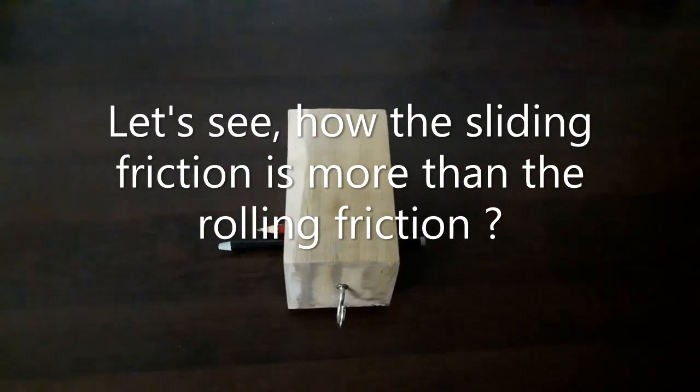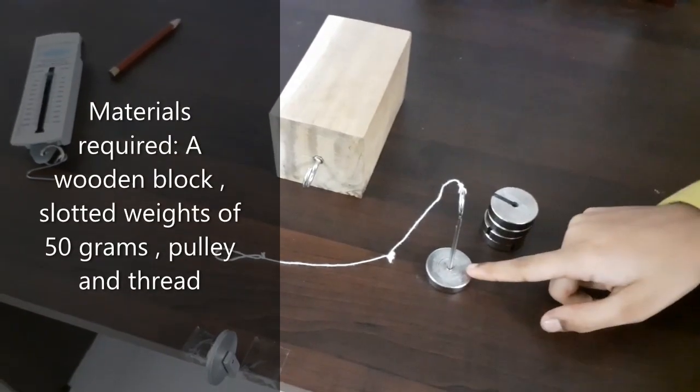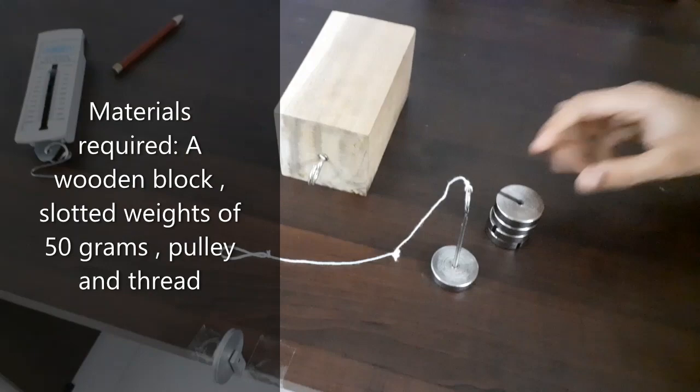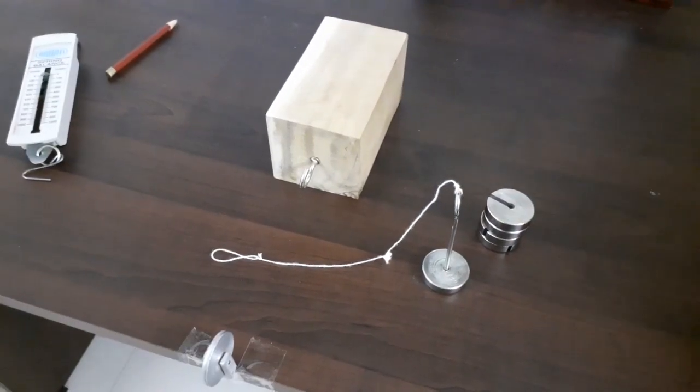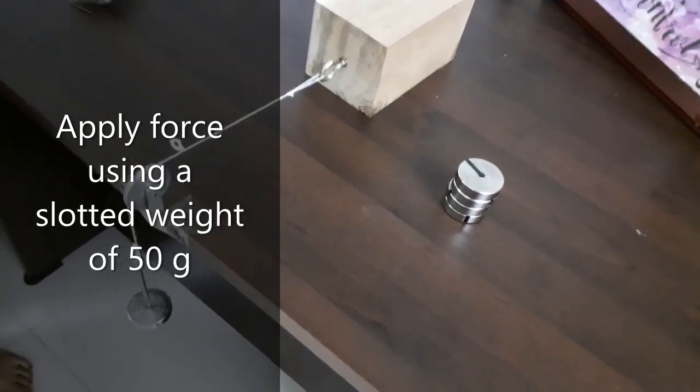Let us move on to the actual experiment where we are going to see how sliding friction is more than rolling friction. Here I have a weight of 50 gram and some slotted weights of 50 grams. Now we have placed the 50 gram as our applied force.